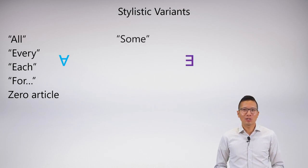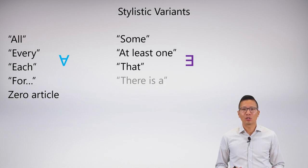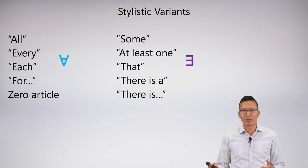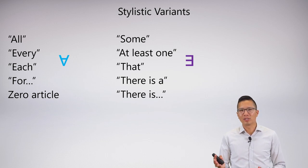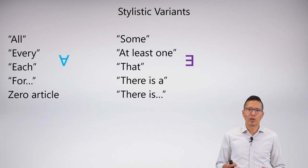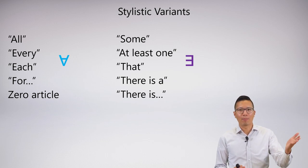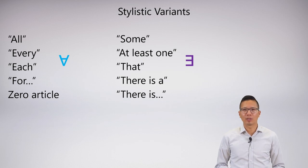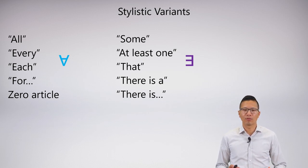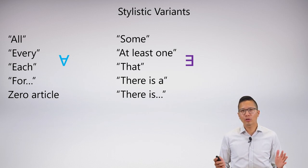For the existential, I've been using a bunch of these already: something, at least one, there is a, there is, there is some, there is at least one. Also 'that' — when I say like 'that mouse over there' or something like that — these are all stylistic variants of the existential.